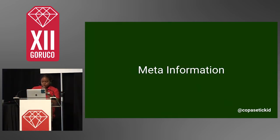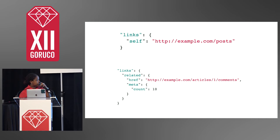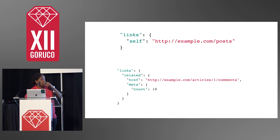There's also the meta information — just non-standard information. Links usually look like this: the top example shows what it looks like when you requested data, with a link back to what you did request, such as requesting all posts from a page. The bottom example shows links for relational data — getting comments for an article. And the meta at the bottom lets you know the count, for example, 10 comments in that particular request.